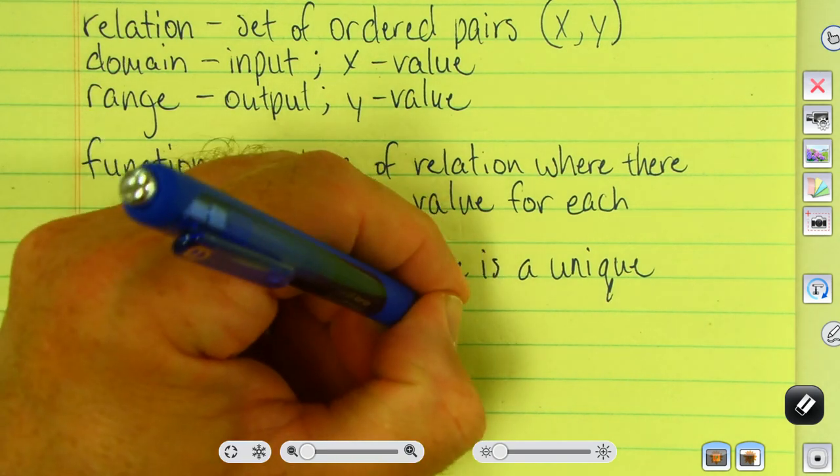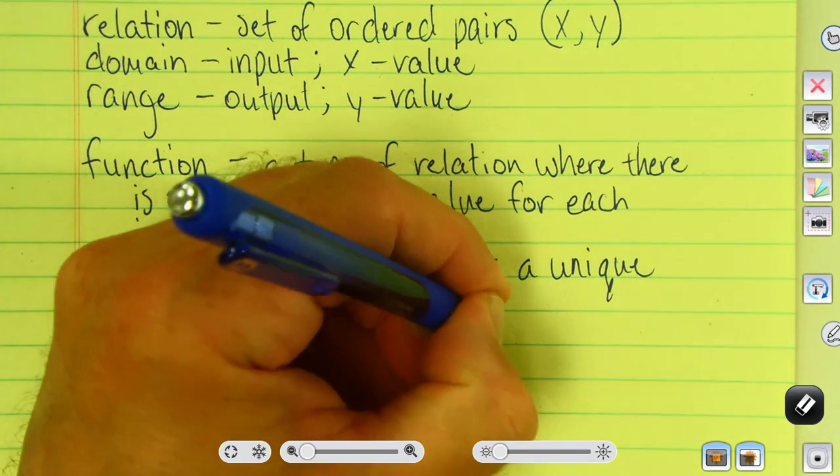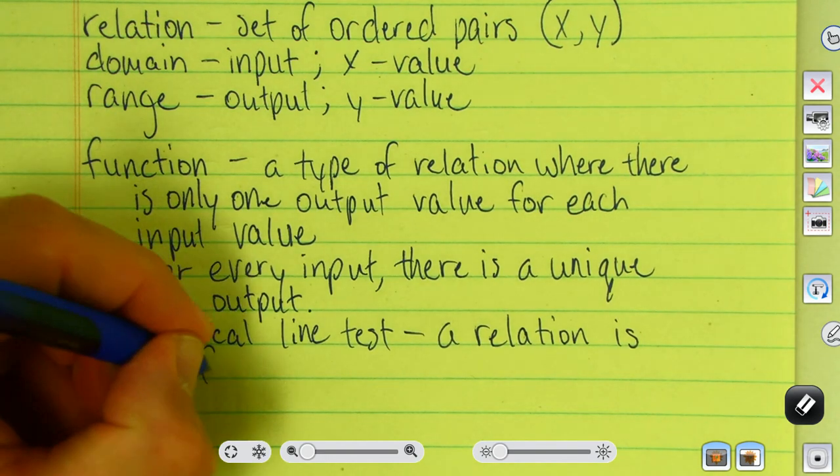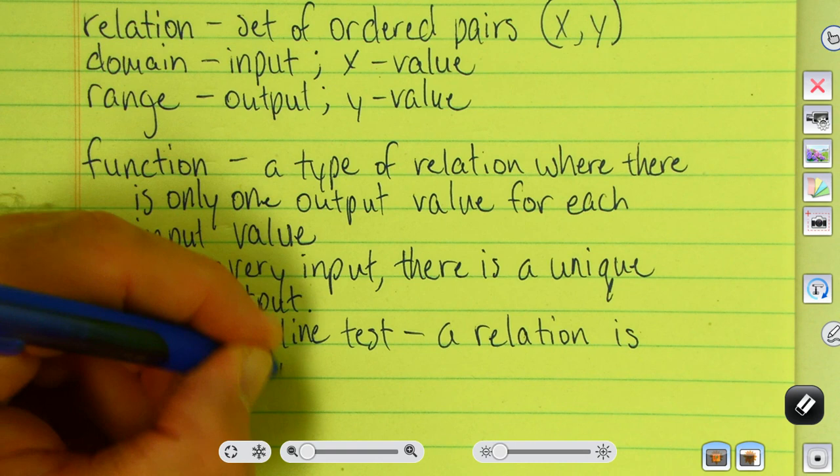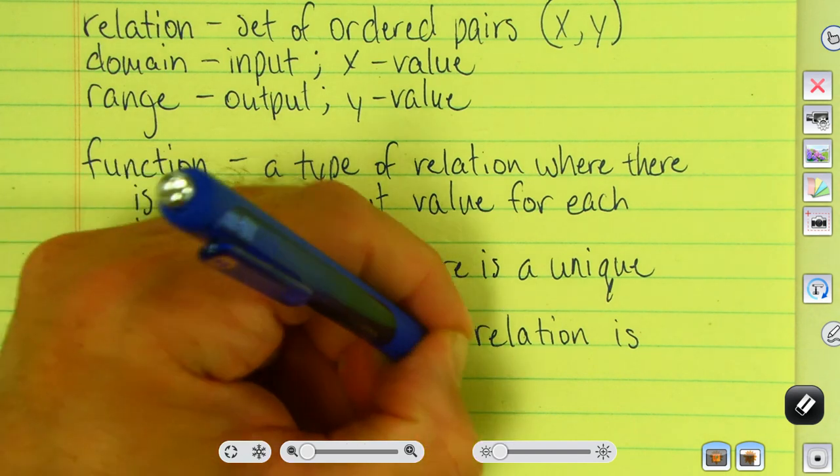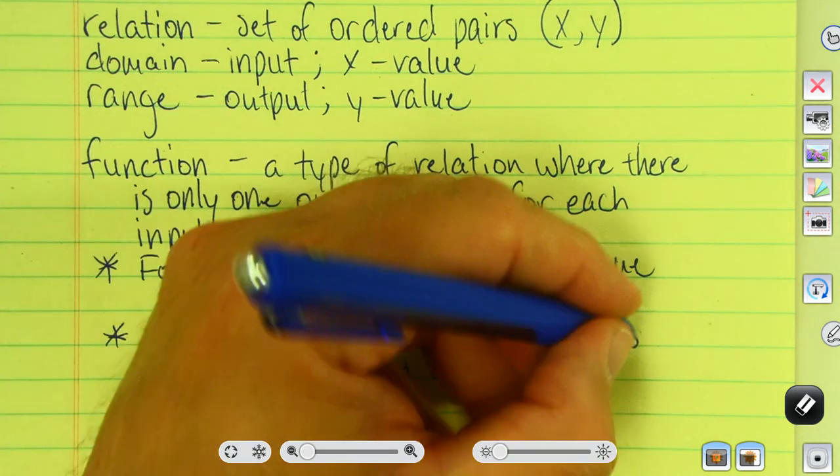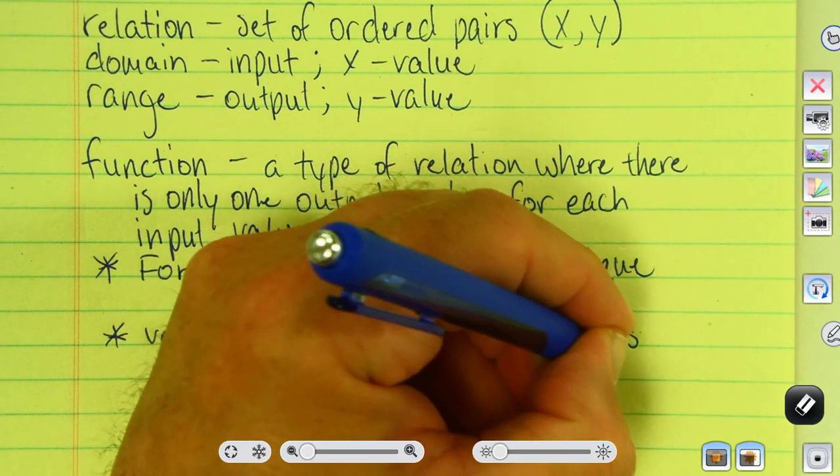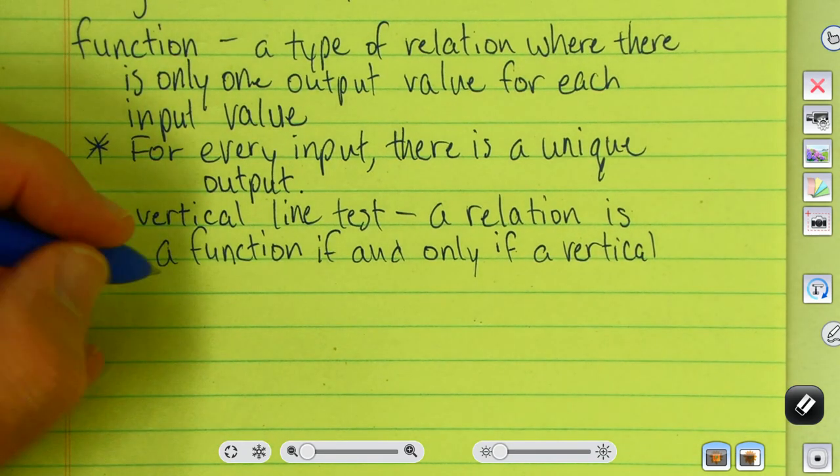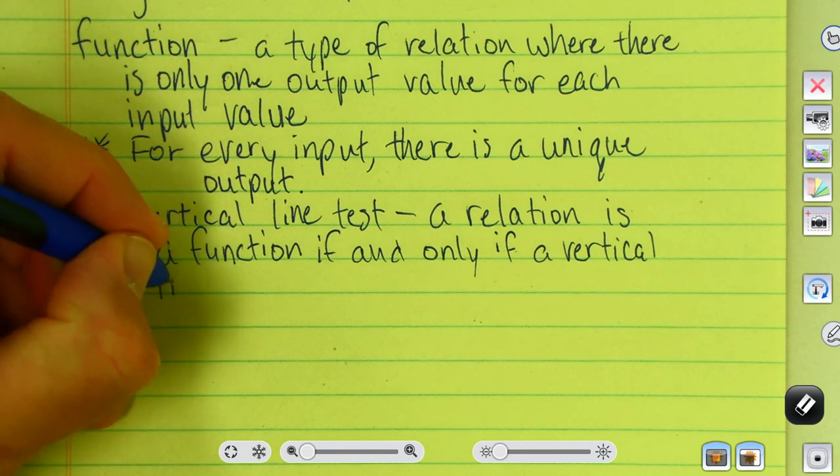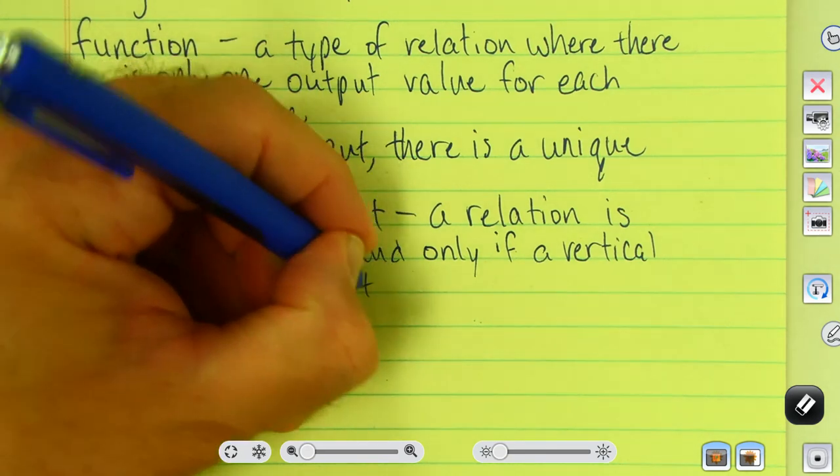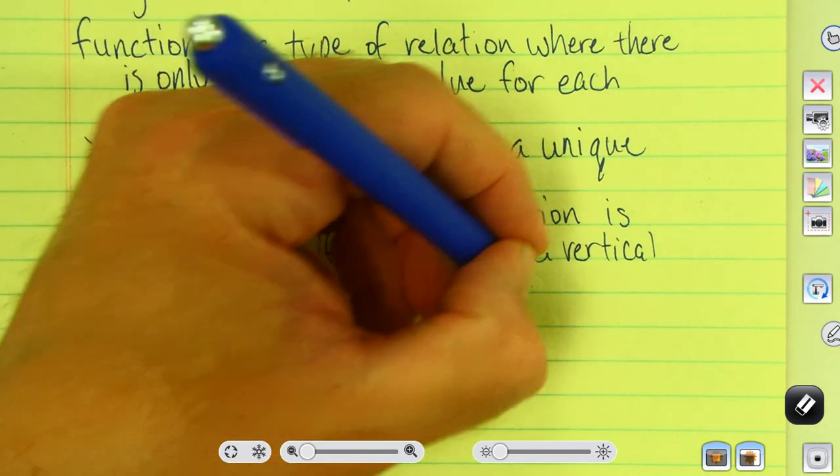It's really a simple thing. A relation is a function if and only if a vertical line does not pass through more than one point on the graph.